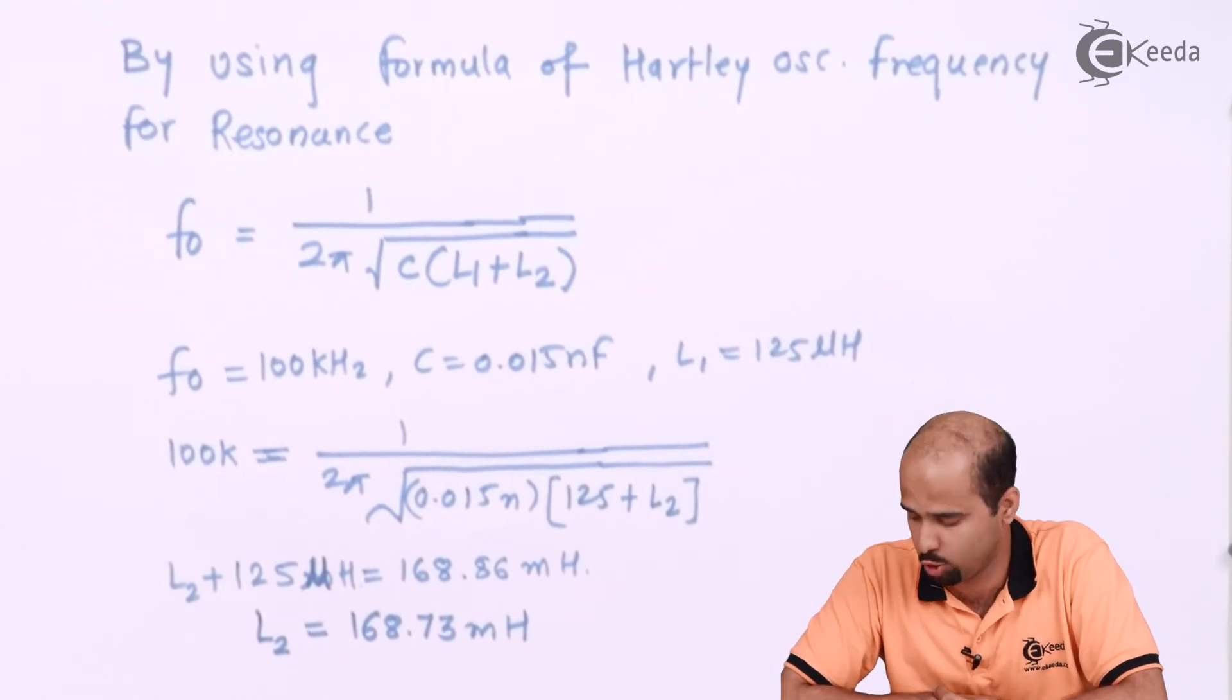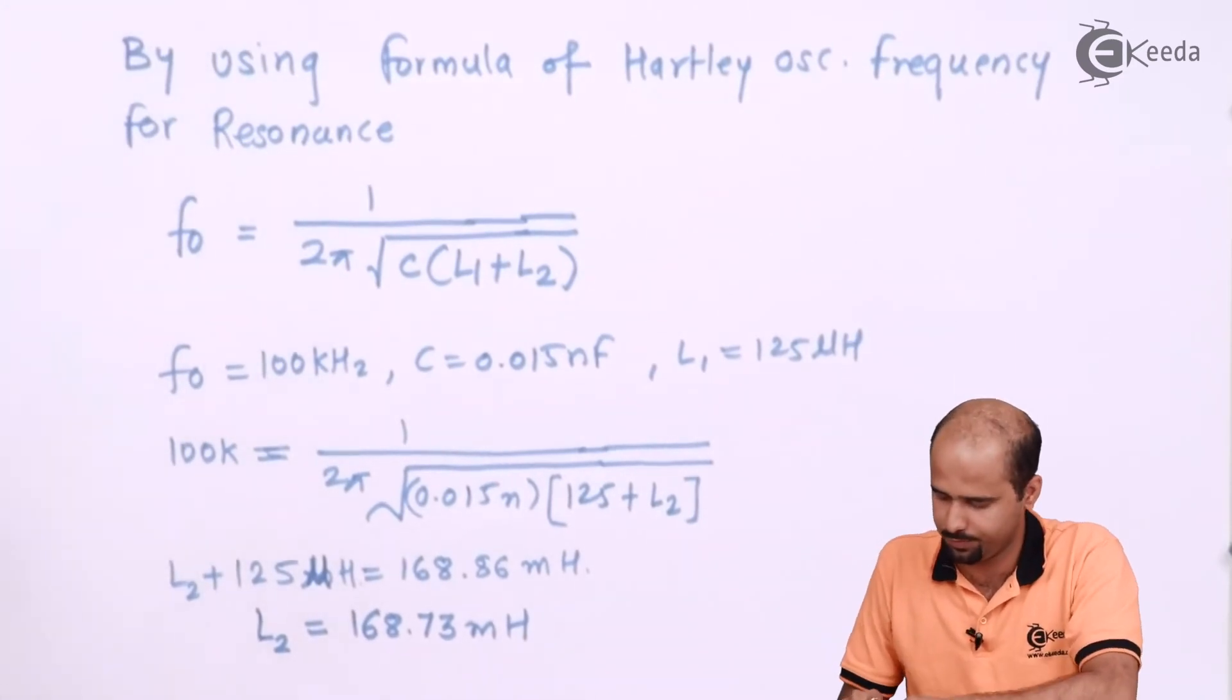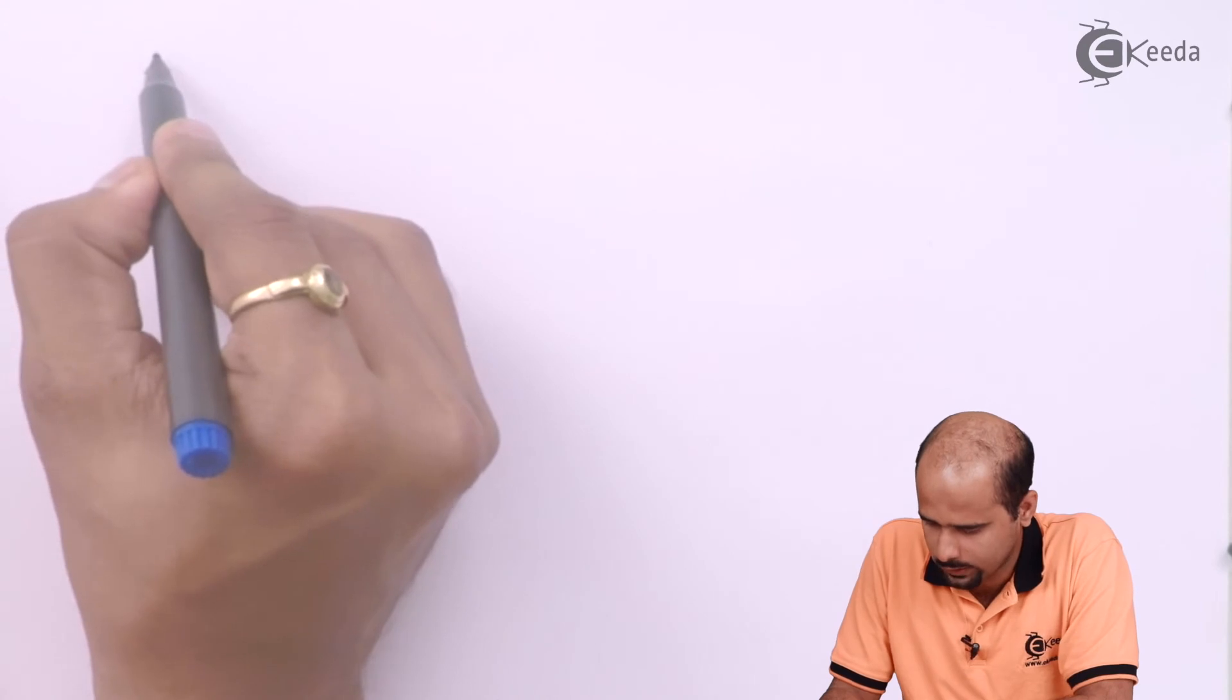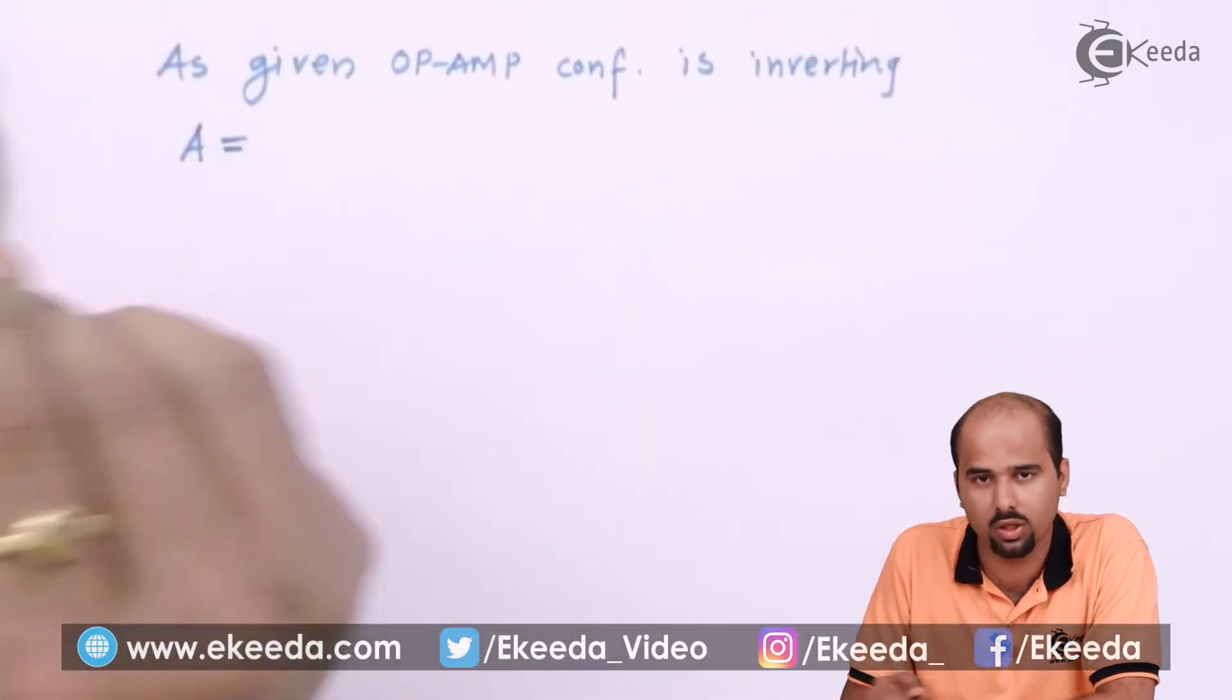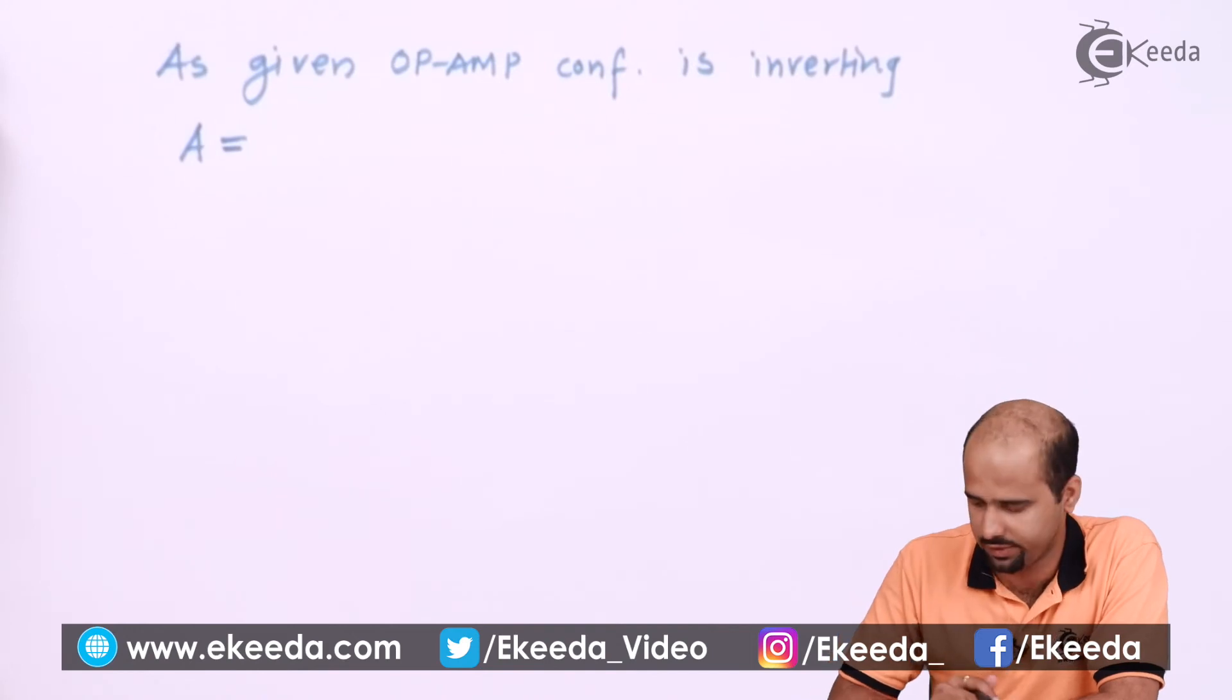so depending on the value of L2, we will be getting the value of gain, right? So we will move further for given operational amplifier is using with inverting configuration.